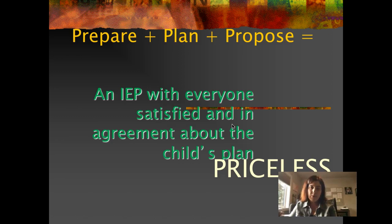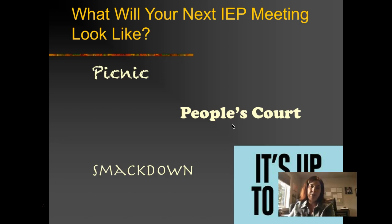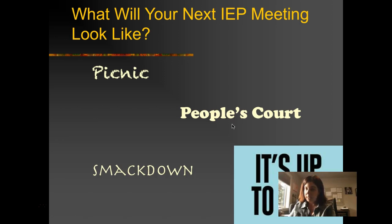Prepare, plan, and propose — and that's priceless. Those are the three steps. If you do all those things and really think about those seven principles of partnership when you're going into an IEP meeting, it's very likely you're going to have a successful meeting and families will feel really valued. Whether the meeting is a picnic, People's Court, or a SmackDown is up to you. Just make sure every person's voice is heard and we're equal partners, and families will feel those meetings are less stressful and more satisfying.